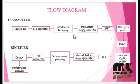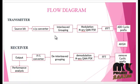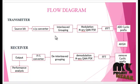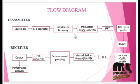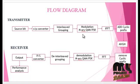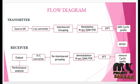The parallel converter data then performs interleaved grouping. Interleaved grouping can benefit from frequency selective fading, which brings frequency diversity gain to OFDM-IM. The interleaved group data is then modulated using M-QAM or PSK modulation.